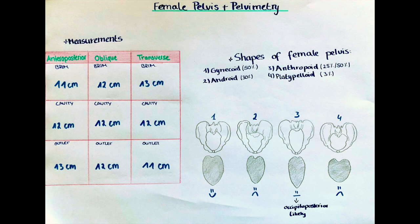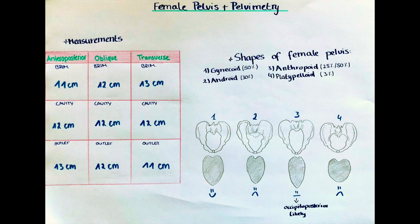The pelvic brim is the border to the pelvic inlet and is formed by a line passing through the prominence of the sacrum, the arcuate line, the pectinal line, and the upper margin of the pubic symphysis. The anteroposterior diameter for the pelvic brim is measured between the upper inner edge of the symphysis pubis and the sacral promontory and usually measures 11 cm. This is the only measure we can directly measure clinically with the use of a hand or an instrument.